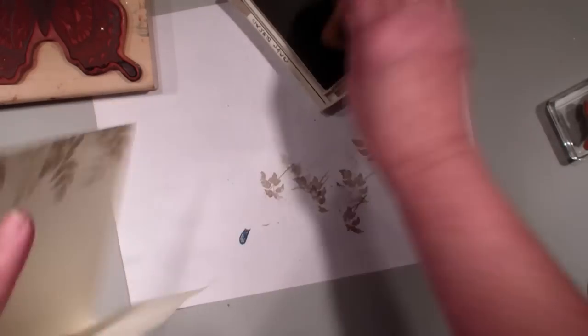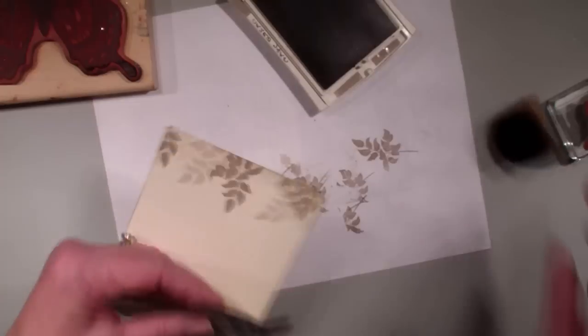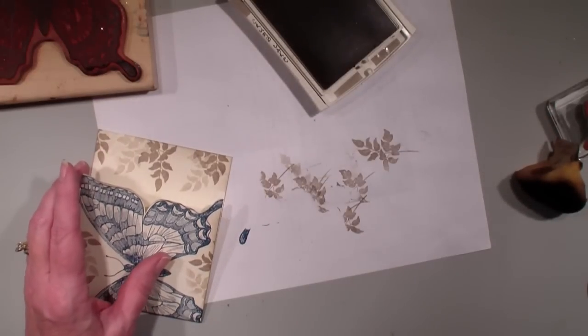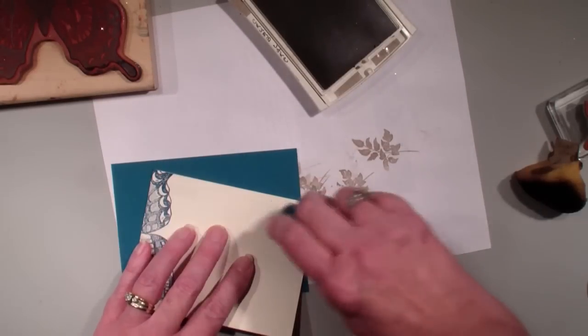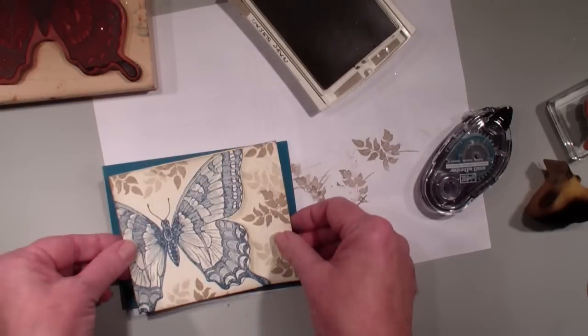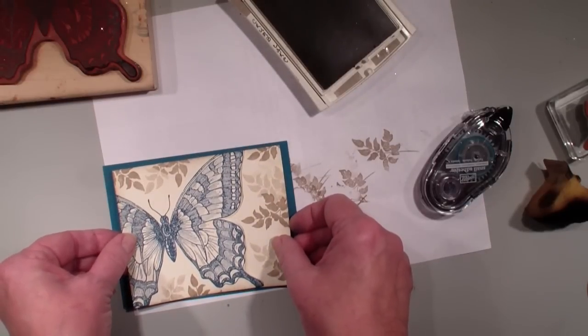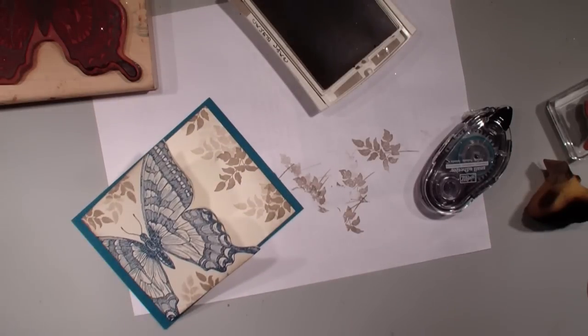bring in a piece of the Island Indigo blue. This measures our standard four and a quarter by five and a half, so just going to place that card on there like so. And then I'm going to bring in